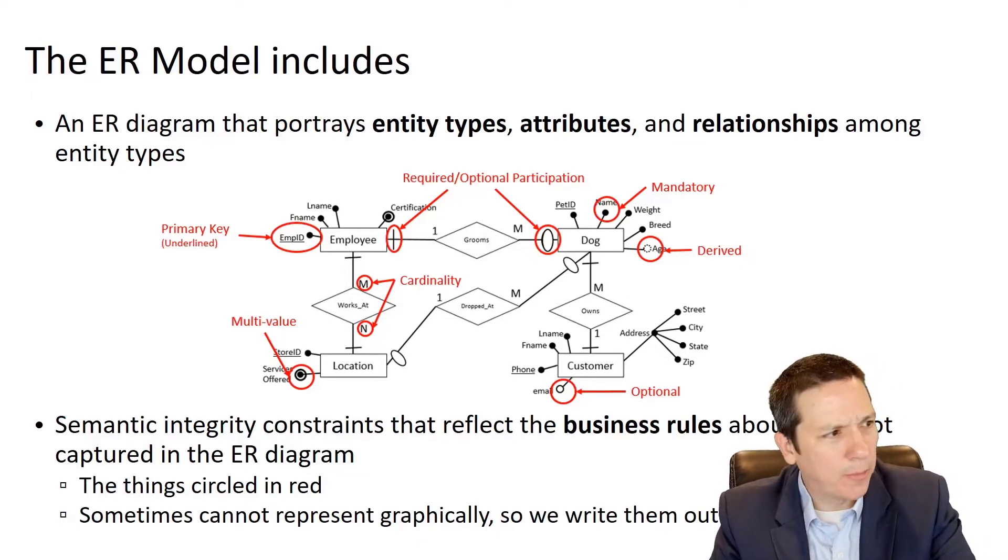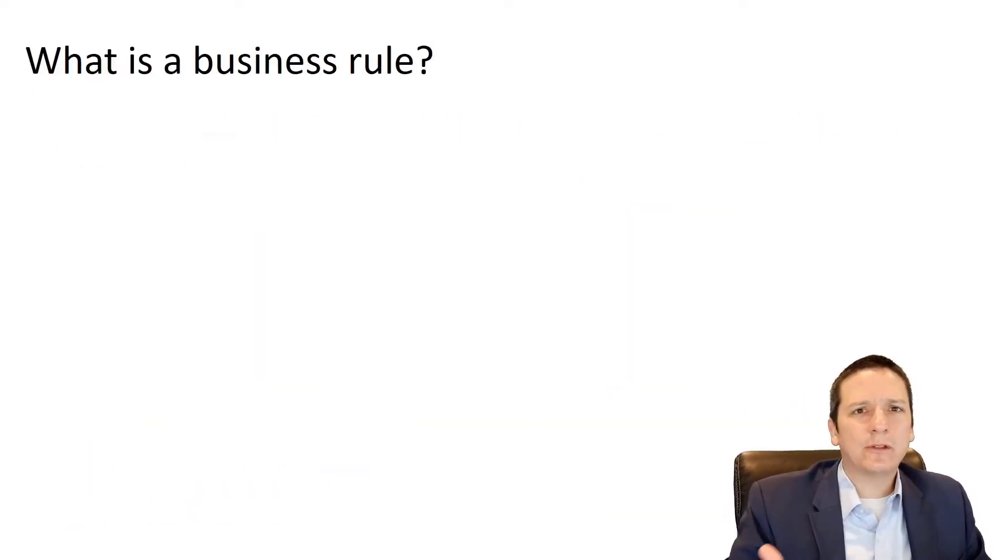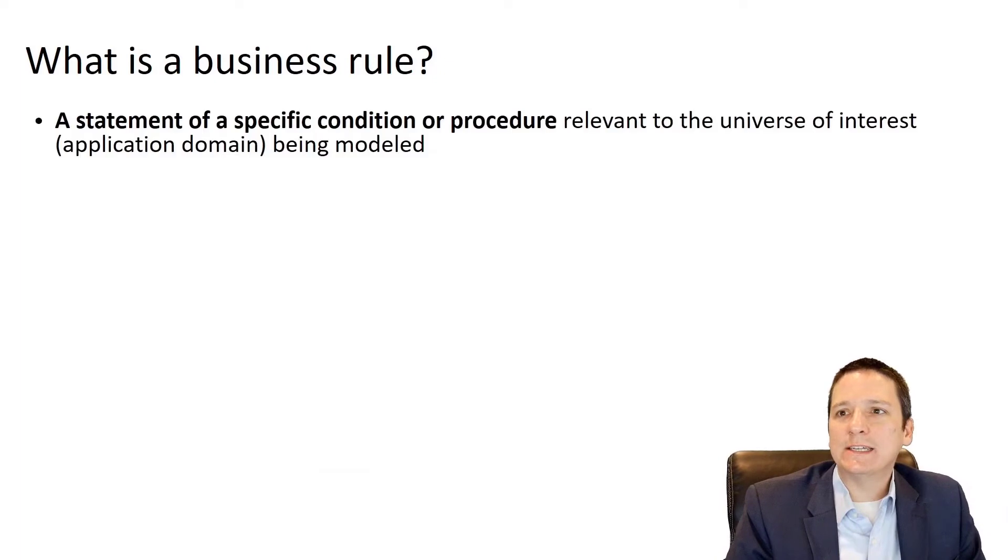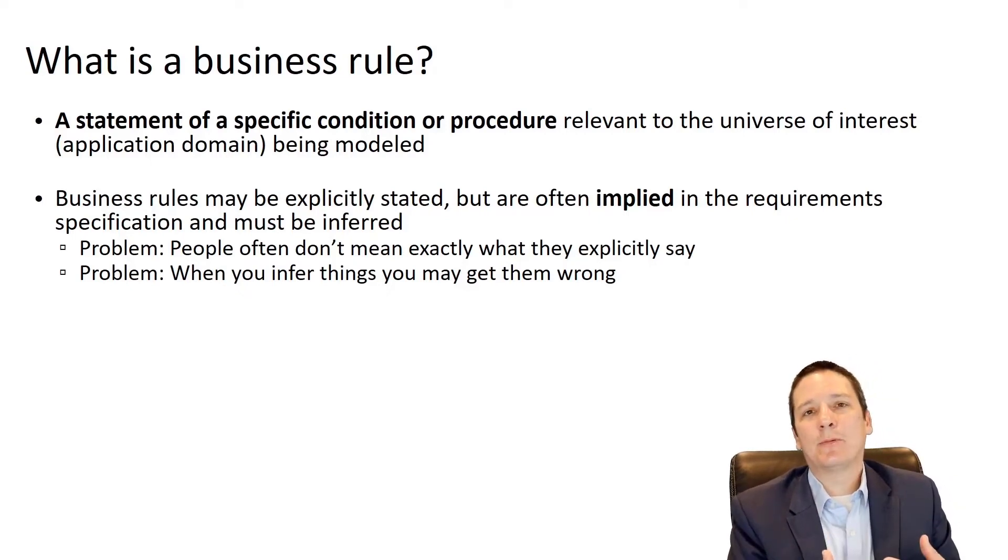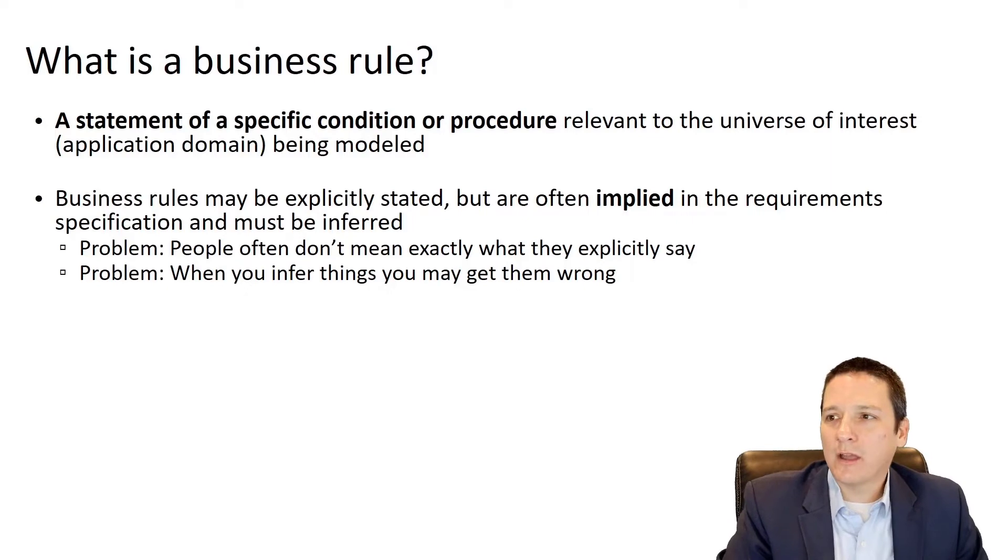So I've mentioned a couple of times now business rules, but we haven't really talked about what a business rule is. And what a business rule is, is a statement of some specific condition or procedure that is relevant to what we are modeling. And business rules sometimes are explicitly stated, but more often than not, it's something that is implied by the users that we're talking to. And we have to infer what they actually mean. And there's a couple of problems that having to read between the lines and understand what people are trying to describe, a couple of problems that come up.